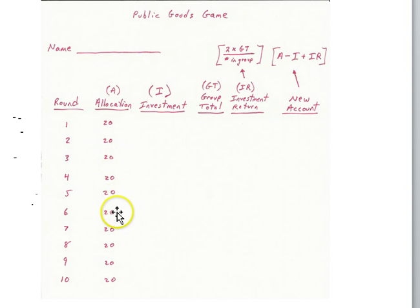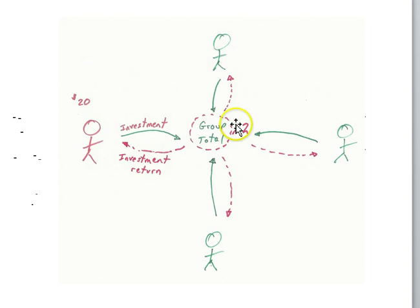Each round you start with twenty dollars. We'll have a column here for the amount of money you decide to invest for each round. So for round one, you'll have twenty. How much of that twenty dollars are you going to invest in the public pot?